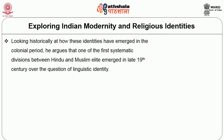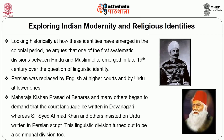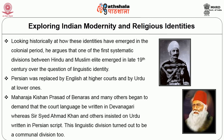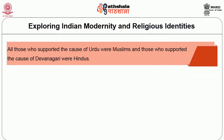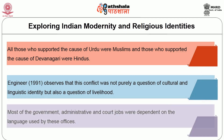Looking historically at how these identities emerged in the colonial period, Engineer argues that one of the first systematic divisions between Hindu and Muslim elites emerged in the late 19th century over the question of linguistic identity. Persian was replaced by English at higher courts and by Urdu at lower ones. Maharaja Kishan Prasad of Benares and many others began to demand that the court language be written in Devanagari, whereas Sayyid Ahmad Khan and others insisted on Urdu written in the Persian script. This linguistic division turned out to be a communal division too: all those who supported Urdu were Muslims and those who supported Devanagari were Hindus. Engineer observes that this conflict was not purely a question of cultural and linguistic identity but also of livelihood, as most government administrative and court jobs depended on the language used.